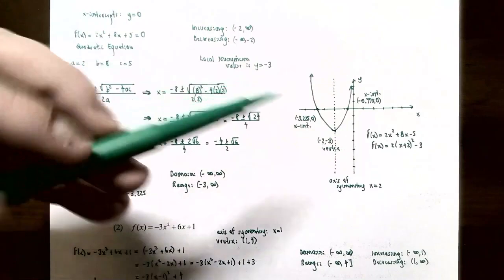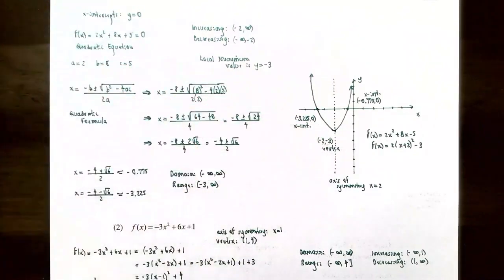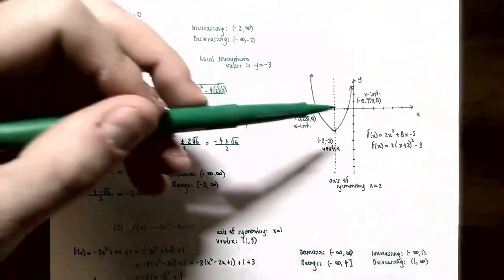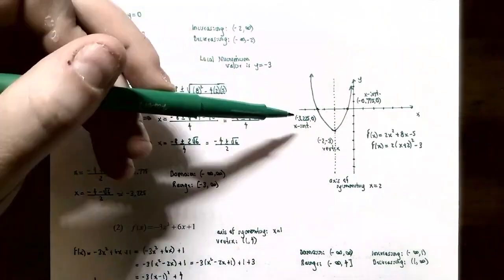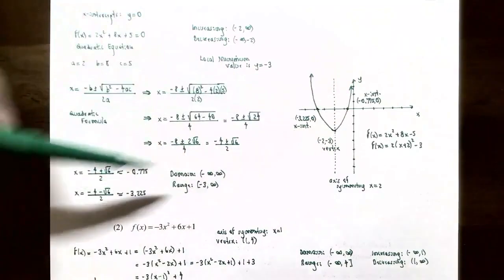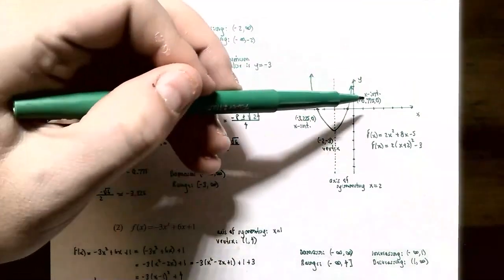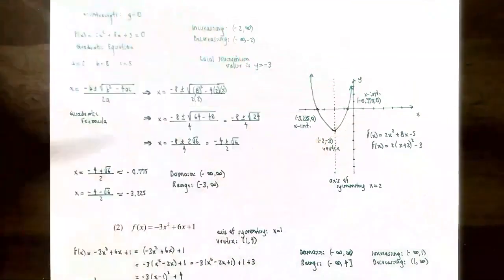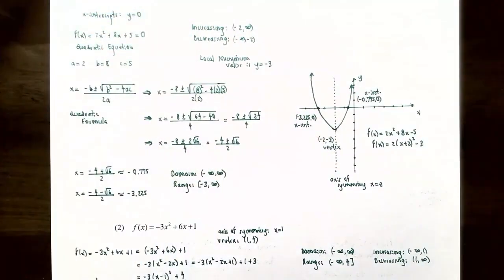Putting it all together on the graph: the vertex is at (−2, −3), the y-intercept is (0, 5), the x-intercepts are at approximately (−3.225, 0) and (−0.775, 0), and the axis of symmetry is x = −2.